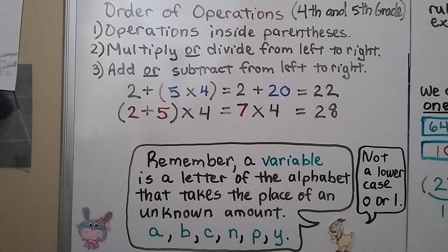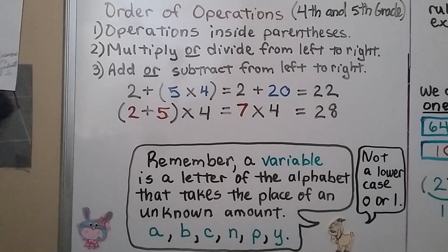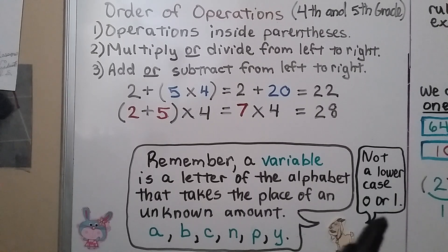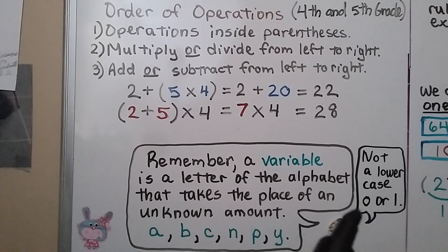A variable is a letter of the alphabet that takes the place of an unknown amount. You might see letters like A, B, C, N, P, Y, Q, X, or S. You won't see a lowercase o or lowercase l because they can be confused with a 0 or a 1.